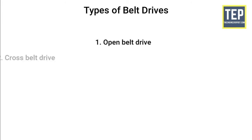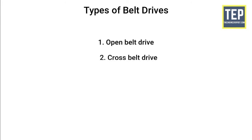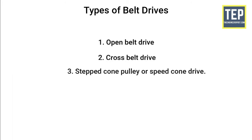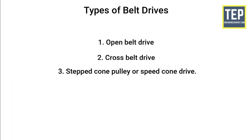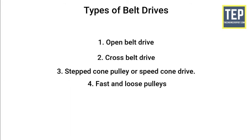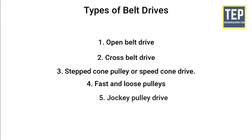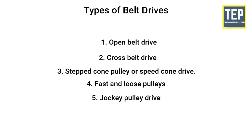Circular belt has a circular cross section and is used with grooved pulleys. There are five main types of belt drives used in automobiles: open belt drive, cross belt drive, stepped cone pulley or speed cone drive, fast and loose pulleys, and jockey pulley drive.